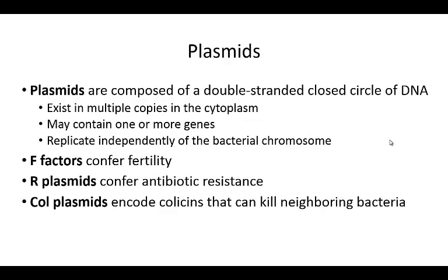Let's talk more about plasmids. In general, plasmids are composed of a double-stranded, closed circle of DNA. There may be one copy or many copies per cell, and they exist within the bacterial cytoplasm. These plasmids contain one or more genes — typically when used in the lab, three to four genes of interest — and they replicate independently of the bacterial chromosome. When using these in a lab, we typically use marker genes such as antibiotic-resistance genes, so that only cells that have taken up the plasmid of interest will be able to grow on antibiotic-containing media.